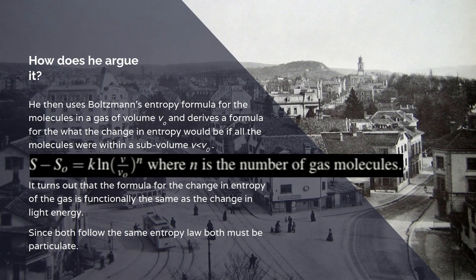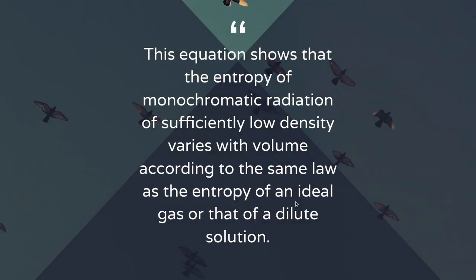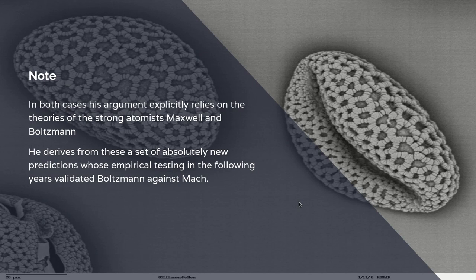So he concludes, since they follow the same entropy law, they must both be particulate, and this quantity n in the light case will correspond to the number of photons, which you get from the previous formula. The equation shows, this is Einstein again, the equation shows that the entropy of monochromatic radiation of sufficiently low density varies with volume according to the same law of entropy as an ideal gas or that of a dilute solution. So he has concluded that light itself must be particulate, and the important point, he's done it by using the maths of Boltzmann, who was Mach's arced rival.